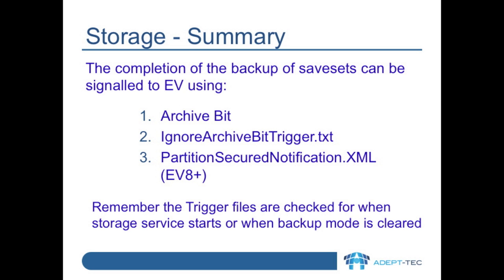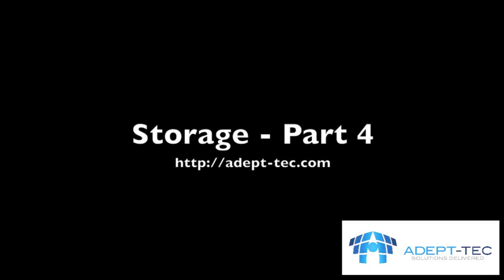In summary, the completion of the backup of save sets can be signaled to Enterprise Vault using either the archive bit, ignore-archive-bit-trigger.txt, or partition-secured-notification.xml. Remember, the trigger files are checked for when the storage service starts or when the backup mode is cleared. I hope that showing you some of these backup mechanisms is useful to you. Thank you. Goodbye.